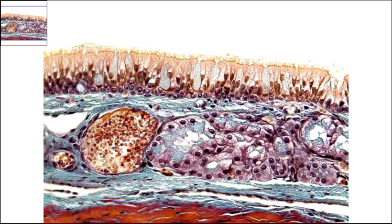This slide is from the trachea. The magnification you currently see is 400x total magnification. This slide shows us the ciliated pseudostratified columnar epithelium with goblet cells. It's this layer of tissue right here that is the pseudostratified columnar epithelium.